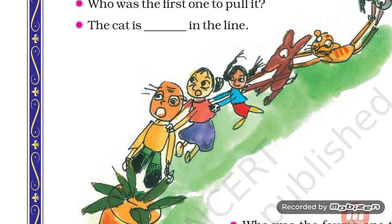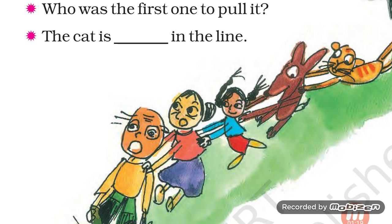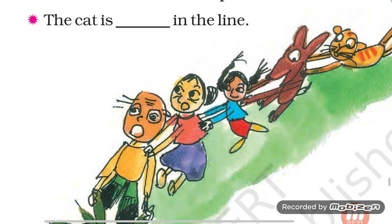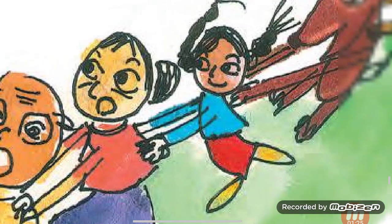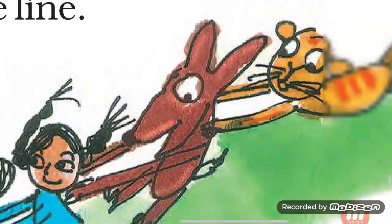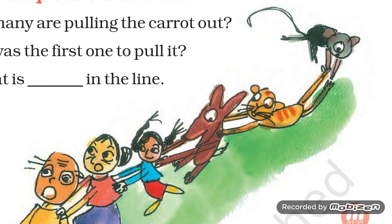Third question — there is a blank to fill in. The cat is dashed in the line. Cat kaunse order pe hai? Which order is the cat in this line? Let's count: first, second, third, fourth, fifth. Yes, the cat is fifth in the line. Fifth means paanchwe — paanchwe sthaan pe hai.